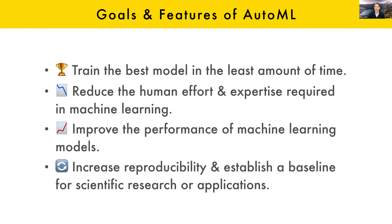Most AutoML systems at this point train a bunch of models and then find a good one. In the future, we might see more meta-learning or trying to predict the best hyperparameters in advance so you don't waste the time to actually compute those models. But most tools today are not at that point yet. There are a couple of tools that do something like that, but to actually get really good performance, you do end up having to really compute a lot of things.